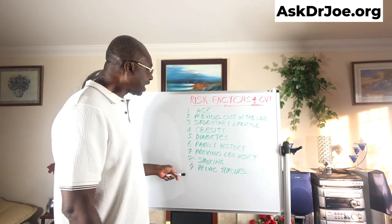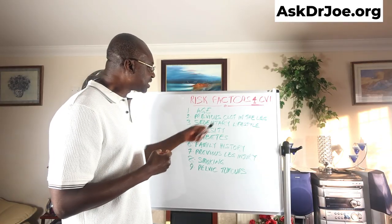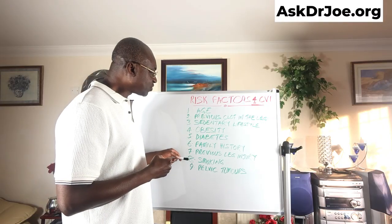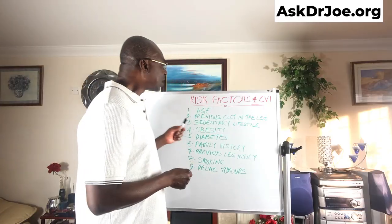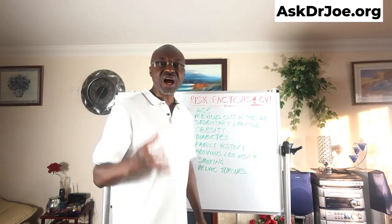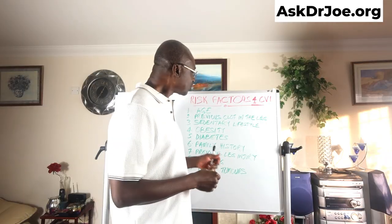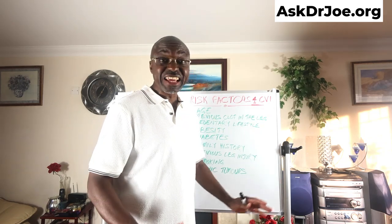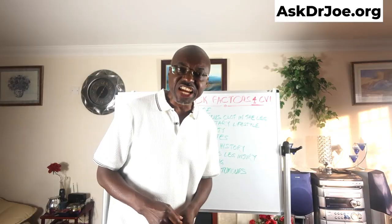So the nine risk factors are: age, previous clot in the leg, sedentary lifestyle, obesity, diabetes, family history, previous leg injury, smoking, and the presence of pelvic tumors. The more of these risk factors you have, the higher your risk. If you have just one risk factor you could get away with it, but if you're packing three, four, or five risk factors, your risk increases exponentially.